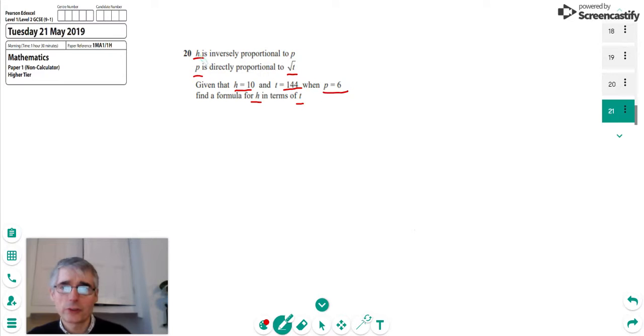So the first thing we can do is we can try and write these statements about proportionality in mathematical notation. So we're told that H is inversely proportional to P. So what we can do is we can write that H, and this is a symbol for proportionality. And when it says it is inversely proportional, it means it's proportional to 1 over P. So that's what the inverse bit means there.